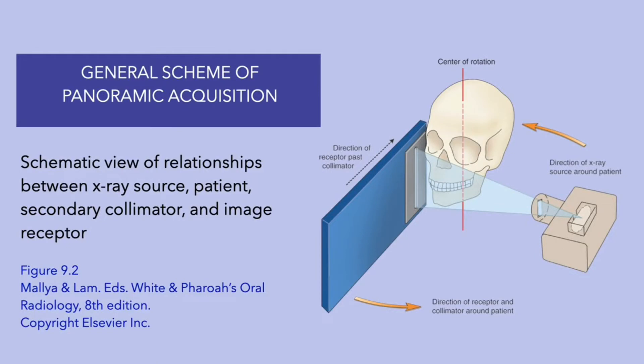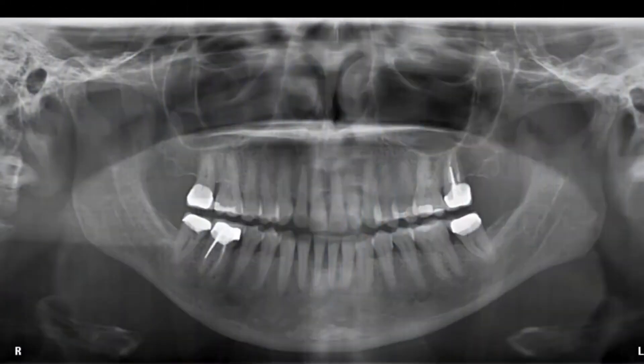This graphic demonstrates the general scheme of making a panoramic radiograph. An X-ray source and receptor rotate around the patient's head. The X-rays are collimated into a narrow vertical beam at the source and again at the receptor. The receptor moves past the collimator during the exposure cycle, acquiring sequential vertical images of the patient's jaws. When viewing a panoramic radiograph, you will recognize that superimpositions from the contralateral side of the jaw are not readily apparent.